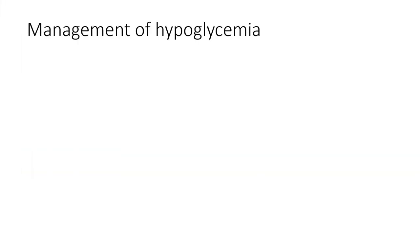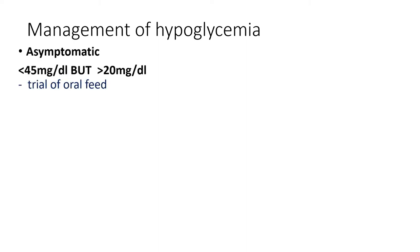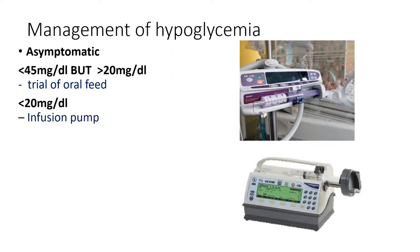Now for management. For the asymptomatic child, Condition 1: when blood glucose is between 20 and 45 mg/dL, we can try oral feeds. But if blood glucose falls below 20 mg/dL and the child is still asymptomatic, we must start IV dextrose via infusion pump.